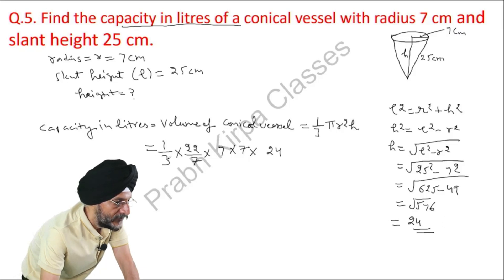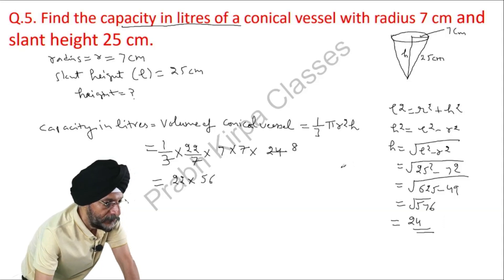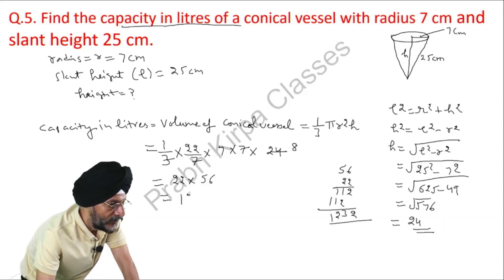7 divided by 7. What we have before us is 22 into 7 into 8, which is 56. So, we come here: 1232 cubic centimeter.